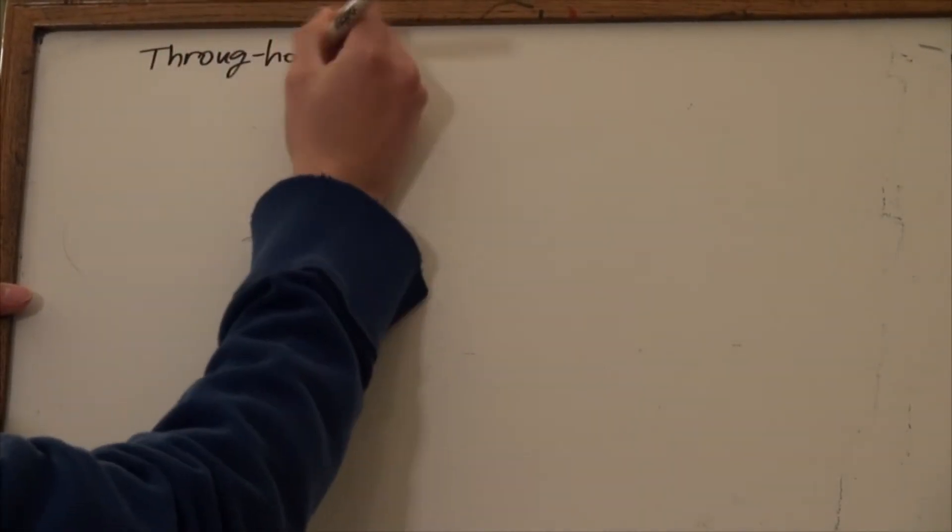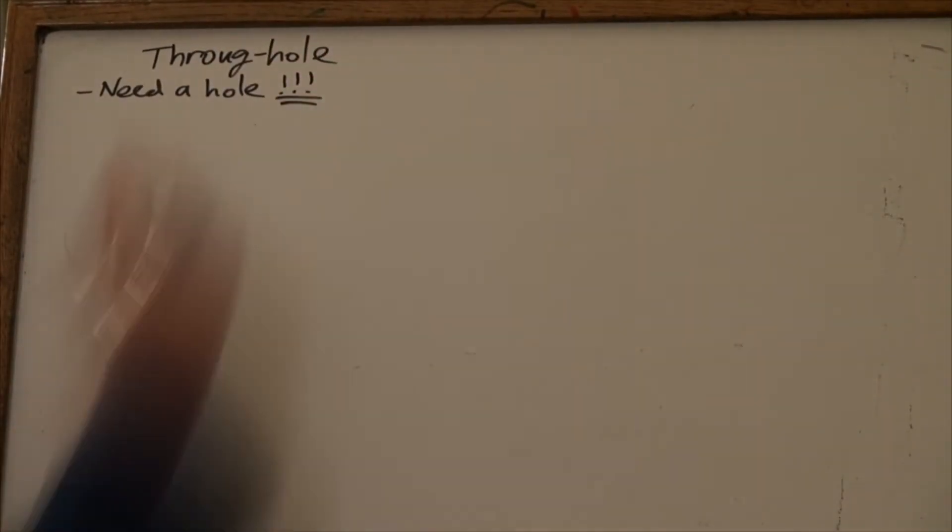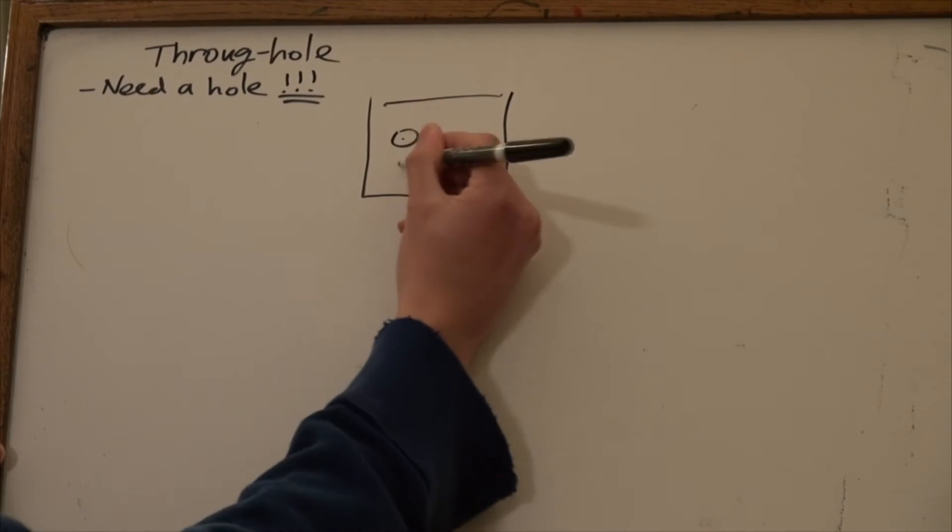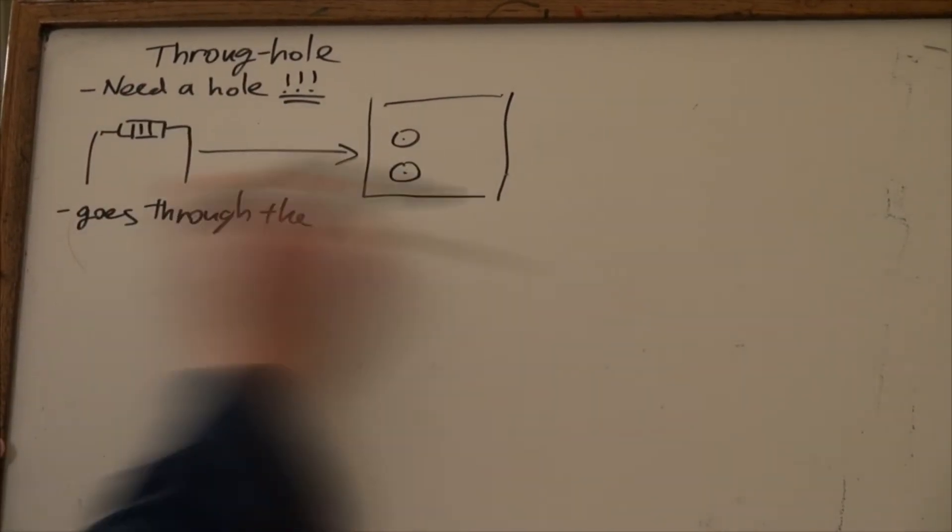Through-hole components, as by their name, need a hole to place the part. These are attached to the PCB through vias, which are essentially holes in the board electrically connected to the copper layers.